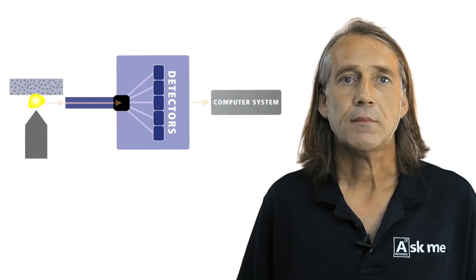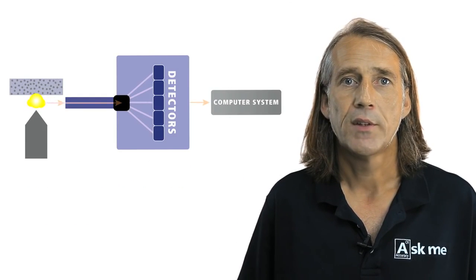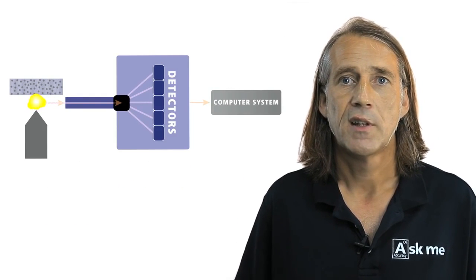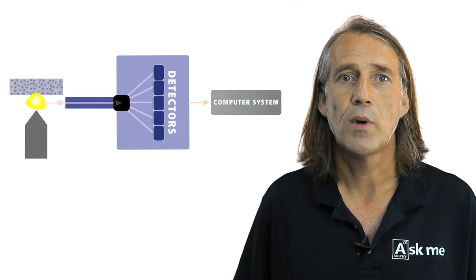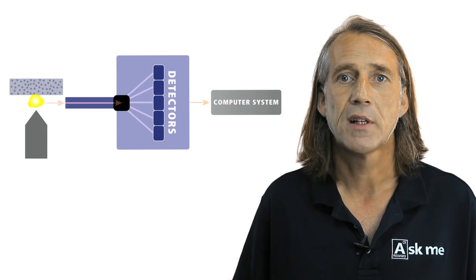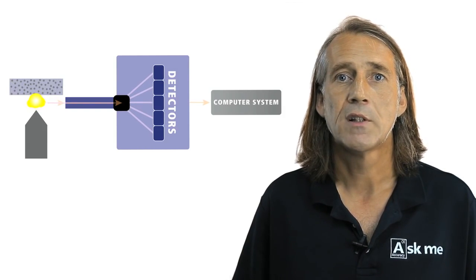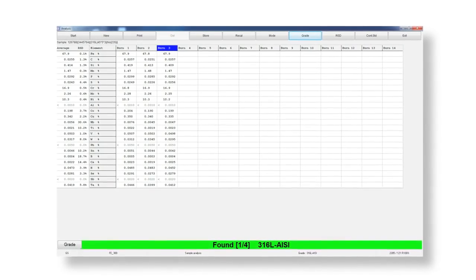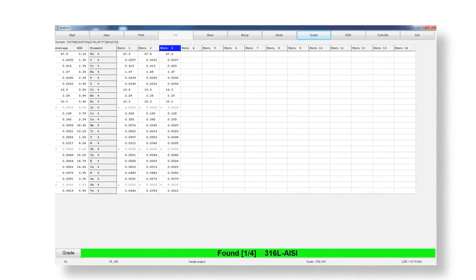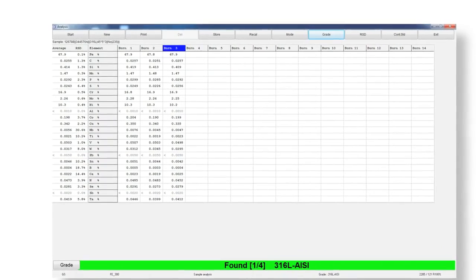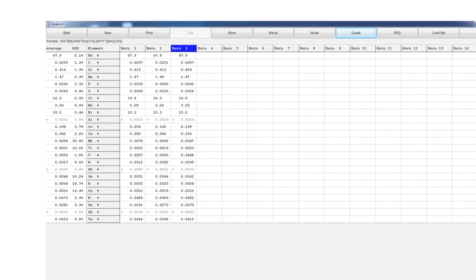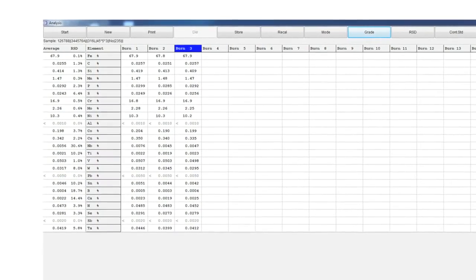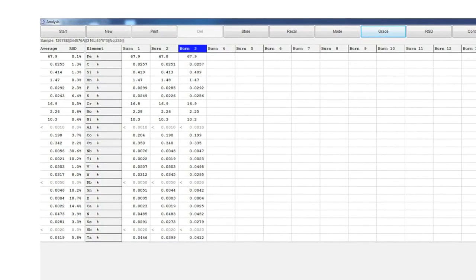The third component is a computer system. The computer system acquires the measured intensities and processes this data via a predefined calibration to produce elemental concentrations. The user interface ensures minimal operator intervention, with results clearly displayed which can be printed or stored for future reference.